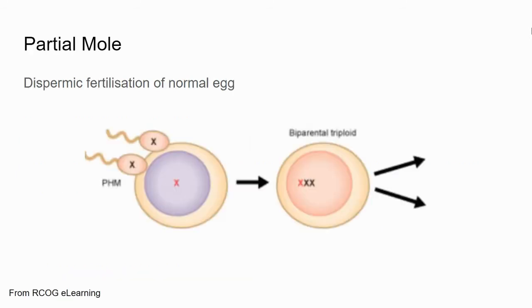Here you have a partial mole. This is where you've had dispermic fertilisation of a normal egg — you can see that two sperm have managed to fertilise the normal egg, resulting in a biparental triploid, which cannot develop normally.